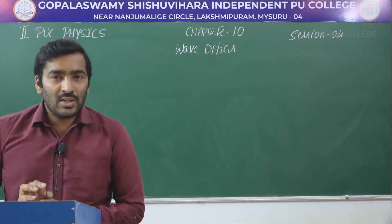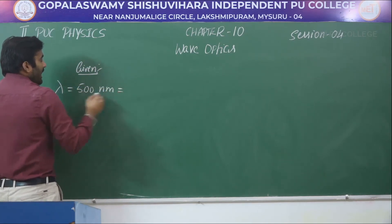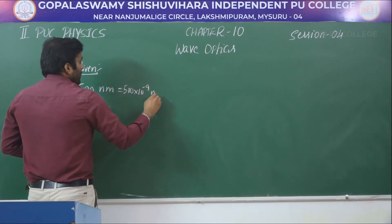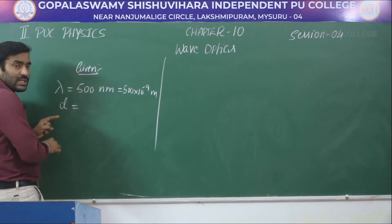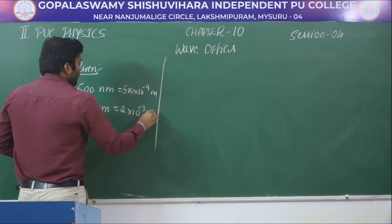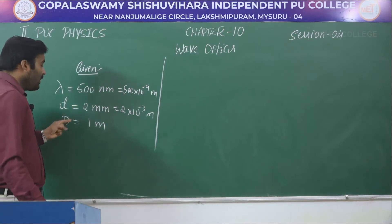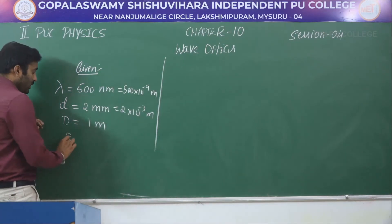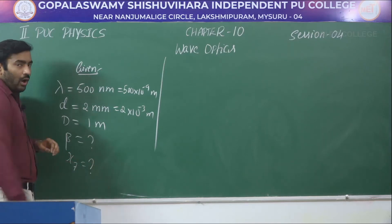Given: wavelength lambda = 500 nanometer = 500 × 10⁻⁹ meter. Small d = 2 millimeter = 2 × 10⁻³ meter. Capital D = 1 meter. We need to find the fringe width beta and the position of the 7th dark fringe.